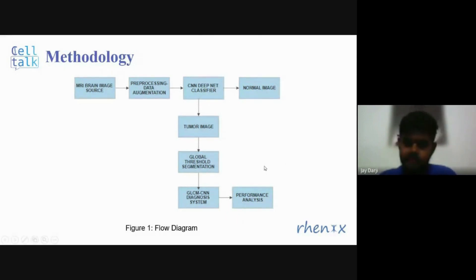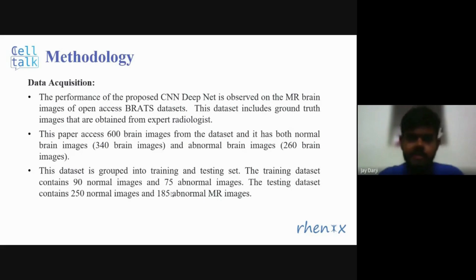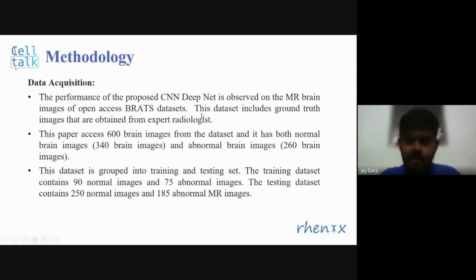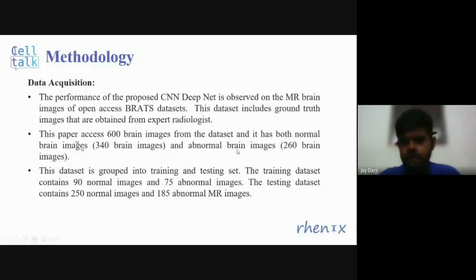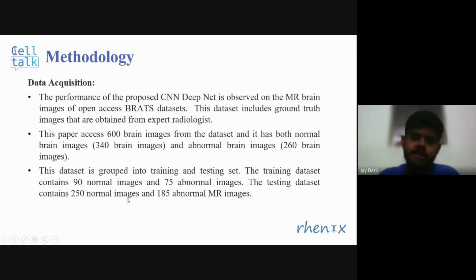The results are evaluated with various performance parameters. For the proposed study, researchers used the BRATS dataset containing MRI images of 600 patients, out of which 340 brain images are normal and 260 are abnormal. This dataset is grouped into training and testing sets, with the training set consisting of 90 normal images and 75 abnormal images.